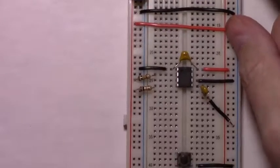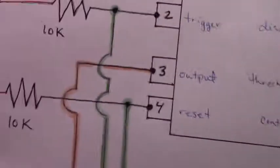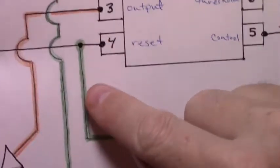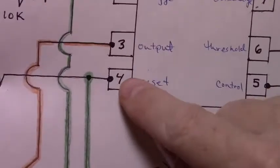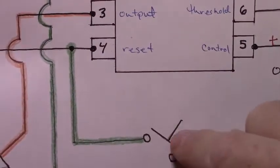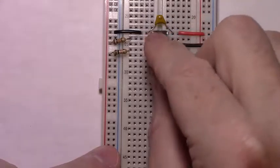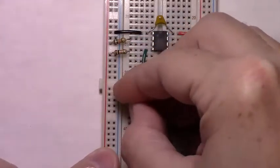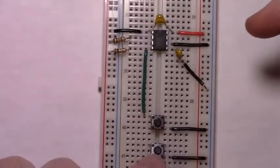With our pull-up resistors in place, we can continue with the circuit. The trigger pin is connected to our bottom momentary button. The reset pin is connected to the upper momentary button. Now to connect the trigger to the bottom button.